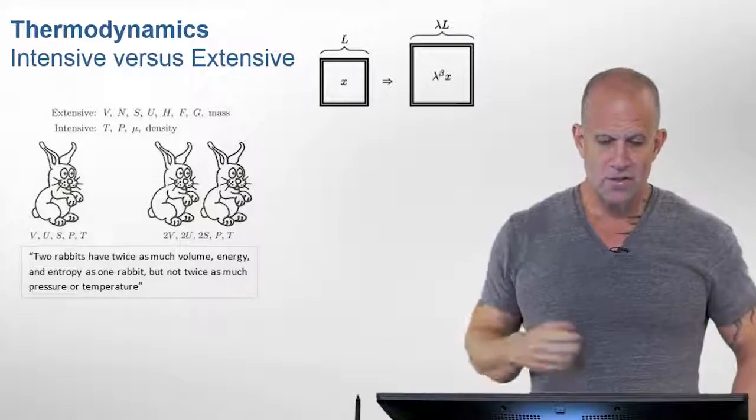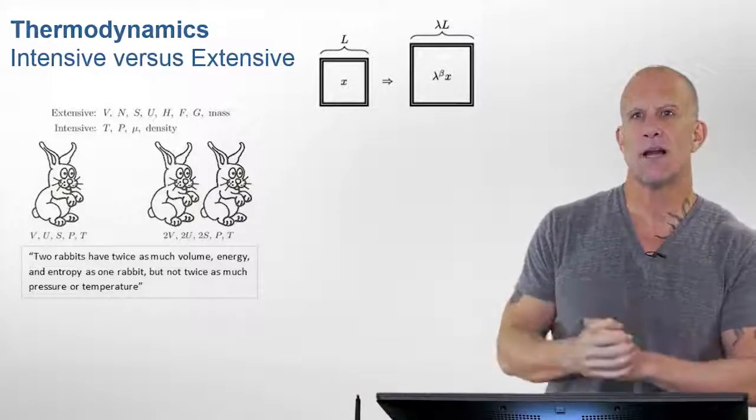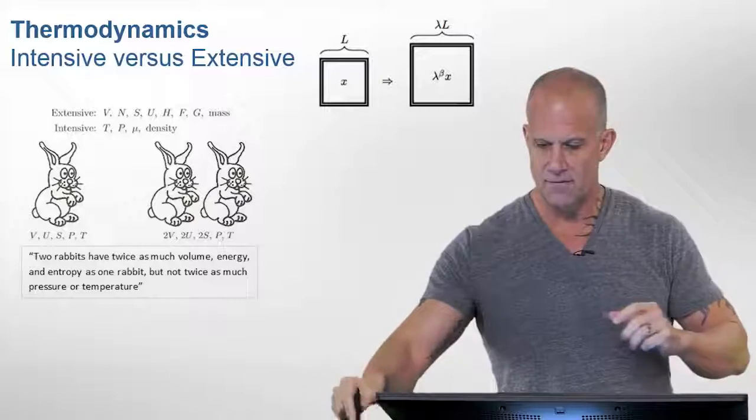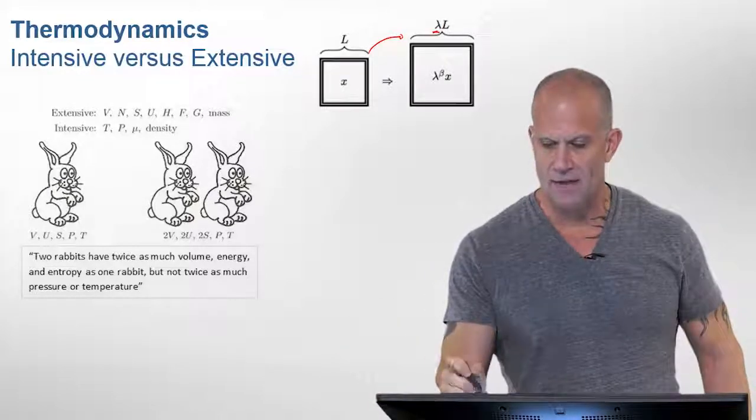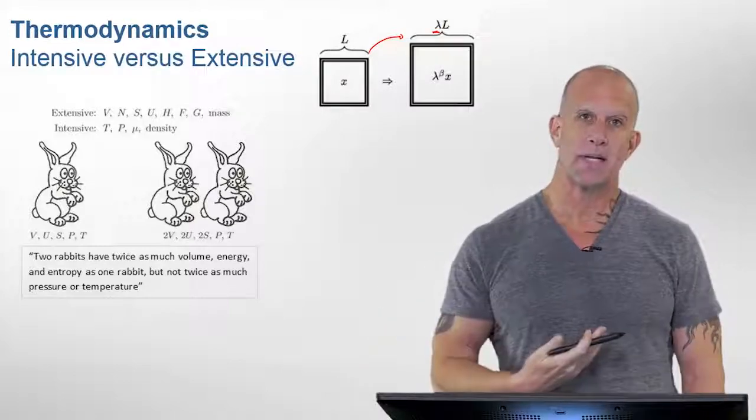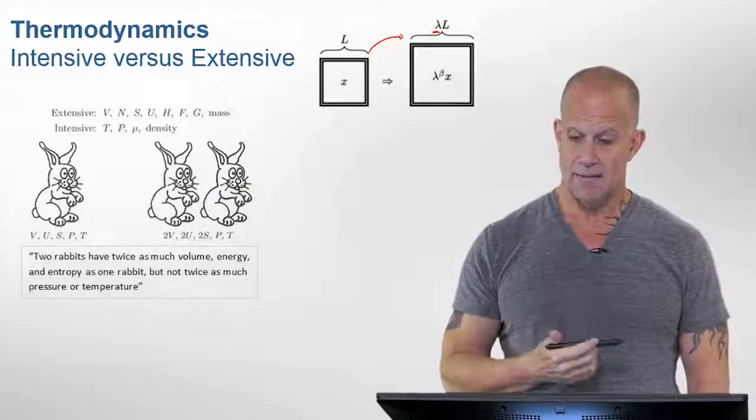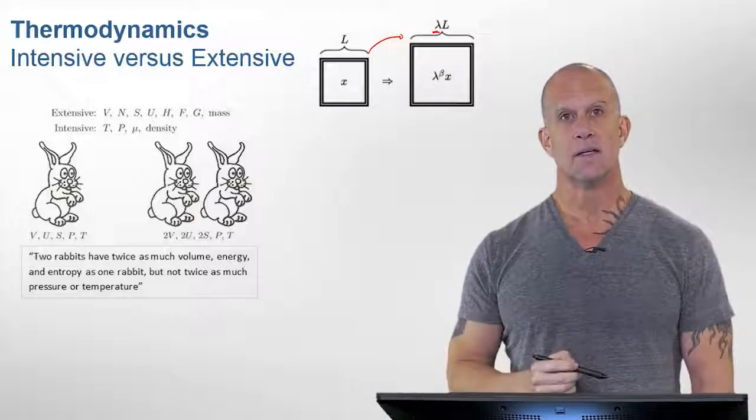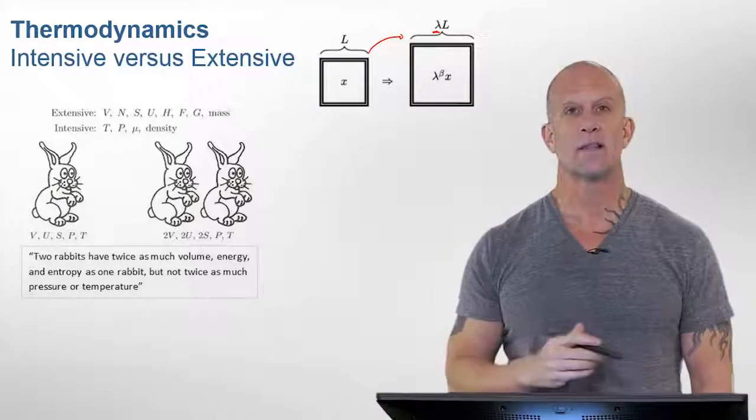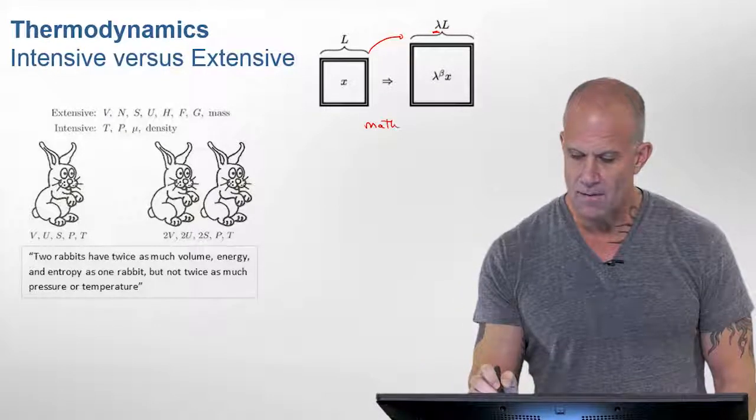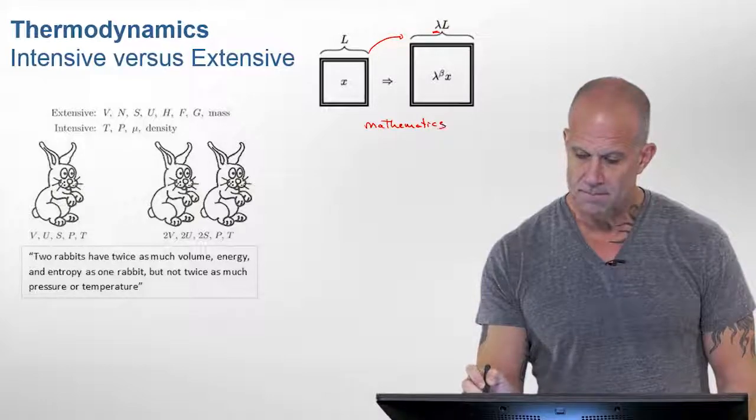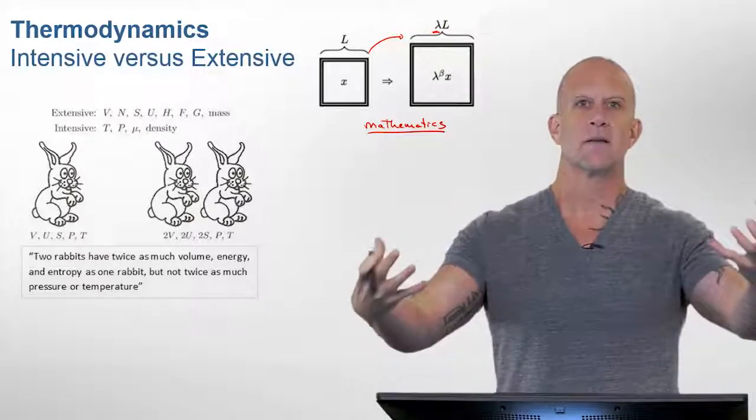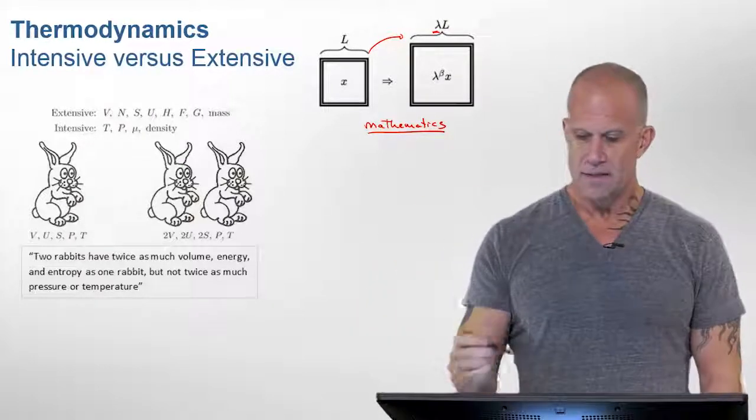Just to look at that in some detail, there's kind of two classical ways to think of this. One is that if we think of a box of material and we scale that box up by this factor lambda, does the property that we're interested in scale as well with that? The extensive property here would be, if it's homogeneous, beta would be equal to one and it would scale with lambda.